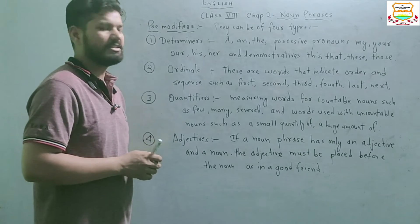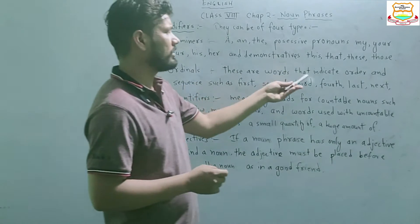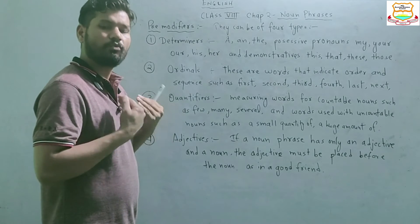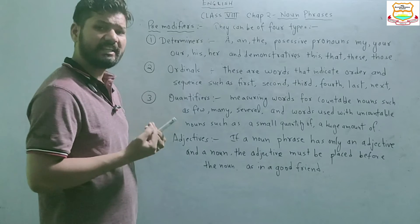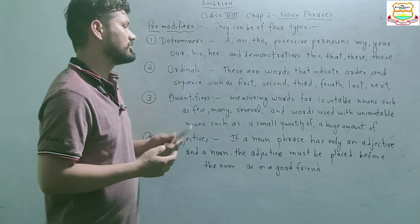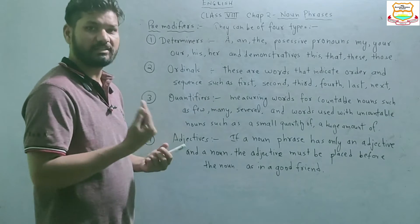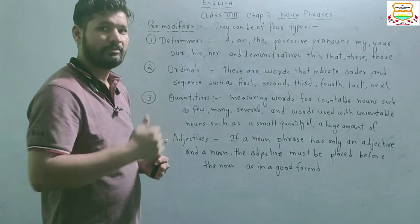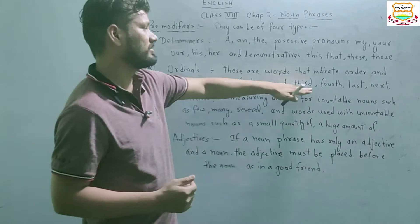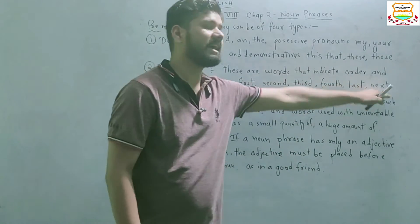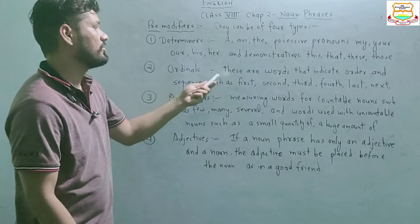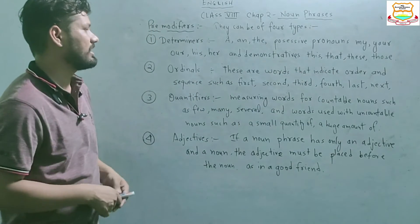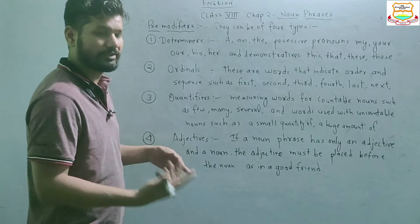The second type of pre-modifier is ordinals. These are words that indicate order and sequence, such as 'first', 'second', 'third', 'fourth', 'last', 'next'. These words that indicate order and sequence are also pre-modifiers in the noun phrase.